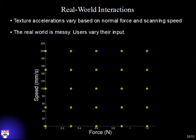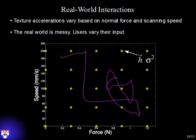Users don't use constant force or speed when exploring a surface — they vary continuously. So we parameterize the workspace based on speed on the vertical axis and force on the horizontal axis. At discrete points in this workspace, we create yellow nodes that each store the vector of filter coefficients h-hat and the noise value sigma squared representing our model of the acceleration response at that condition. In real time, we use bilinear interpolation across the four closest nodes to determine the correct coefficient values and sigma squared noise level at any point the user occupies in the force-speed space.